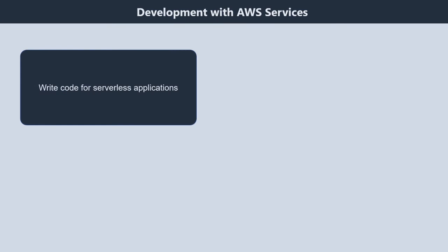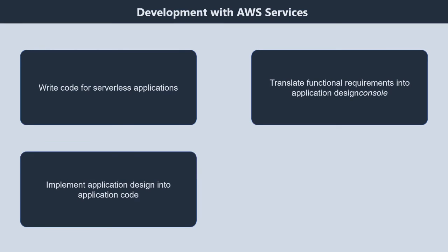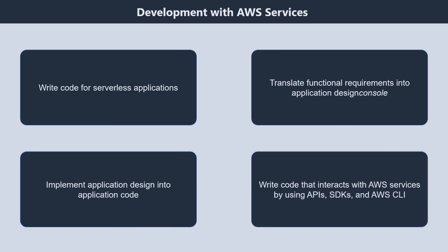Domain 3, Development with AWS Services. It contains four subtopics. First, write code for serverless applications. Second, translate functional requirements into application design. Third, implement application design into application code. Fourth, write code that interacts with AWS services by using APIs, SDKs, and AWS CLI.